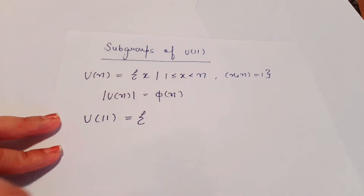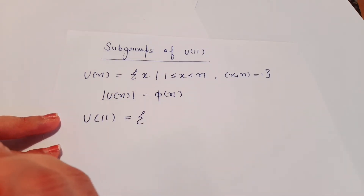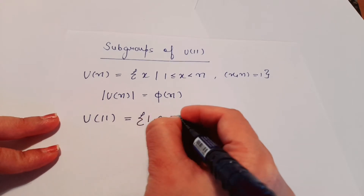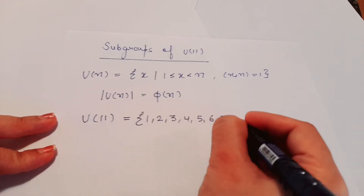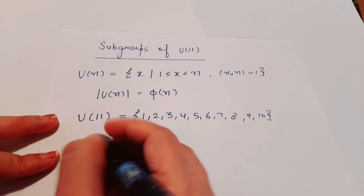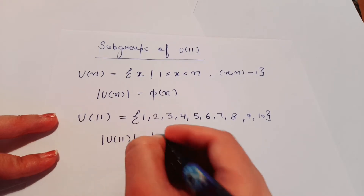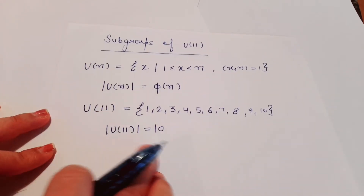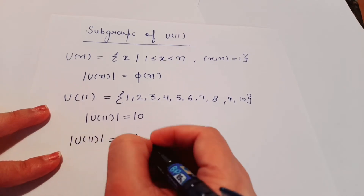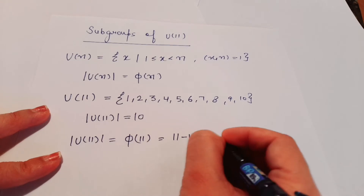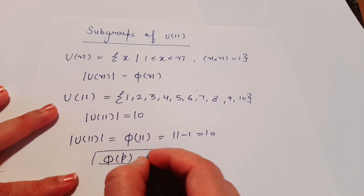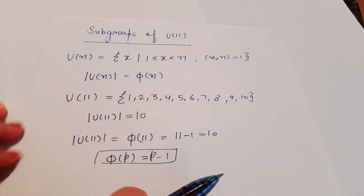First we will make U(11) and check its order. Since 11 is a prime number, all 10 elements — 1, 2, 3, 4, 5, 6, 7, 8, 9, 10 — will come in U(11). The order of U(11) is 10. We can also verify this as phi(11) = 11 − 1 = 10, since phi(p) = p − 1 for a prime p.